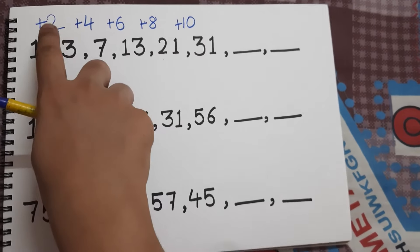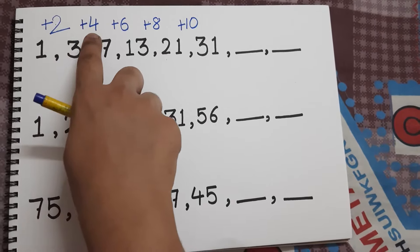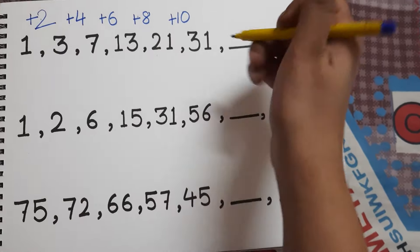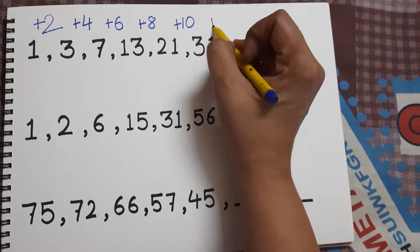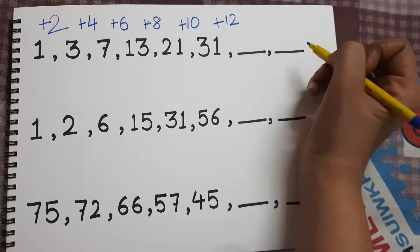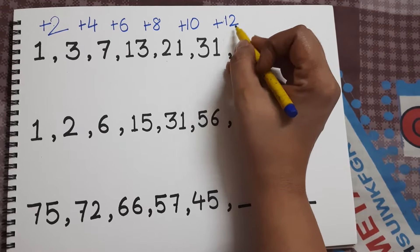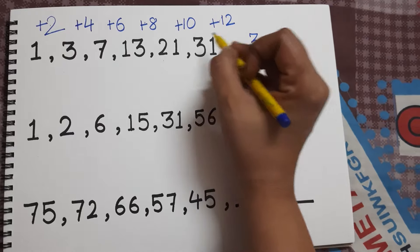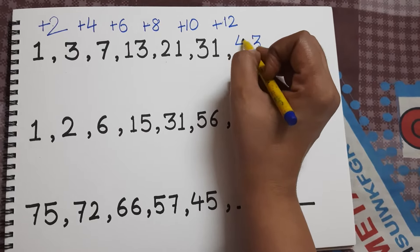Clearly the pattern over here is 2 stable. First we have added 2, then 4. 2 times 3 is 6, 2 times 4 is 8, 2 times 5 is 10. So definitely my next number I will get by adding 12. 2 times 6 are 12.